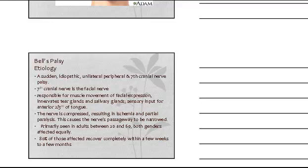Bell's Palsy etiology is a sudden idiopathic unilateral peripheral 7th cranial nerve palsy — that's a lot of words. Remember, it's the facial nerve, responsible for muscle movement and facial expression. The more facial expression the patient has as they talk and communicate, you're going to see that one side of the face isn't moving and the other one is.